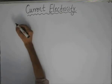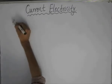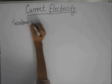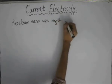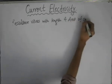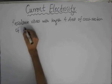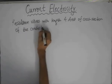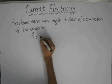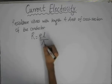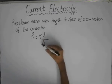We will start with how the resistance varies by varying the length or area of cross section of the conductor. We already know that the formula for resistance is R = ρL/A, where ρ is the specific resistance (resistivity), L is the length, and A is the area of cross section of the conductor.